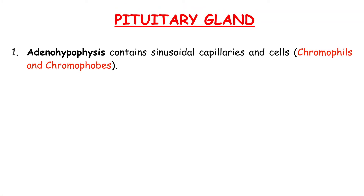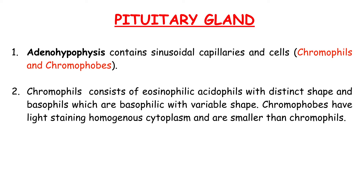Pituitary Gland. The adenohypophysis contains sinusoidal capillaries and cells — chromophils and chromophobes. Chromophils consist of eosinophilic acidophils with distinct shape, and basophils which are basophilic with variable shape. Chromophobes have light staining homogeneous cytoplasm and are smaller than chromophils.